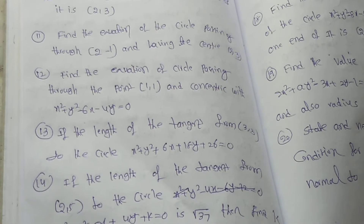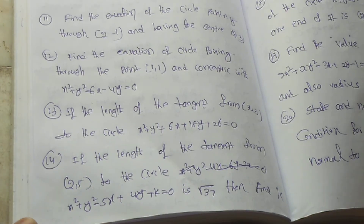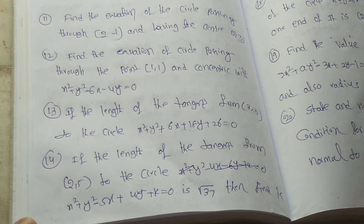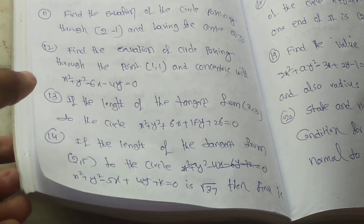Fourteenth question: If the length of the tangent from (2, 5) to the circle x square plus y square minus 5x plus 4y plus k equal to 0 is root 7, then find the value of k.